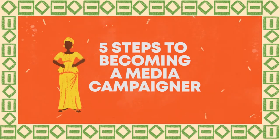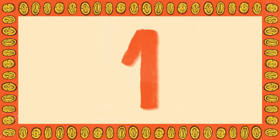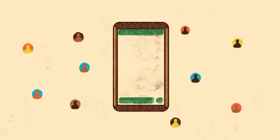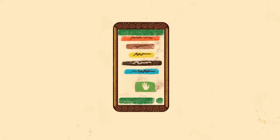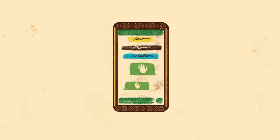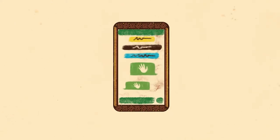5 Steps to Becoming a Media Campaigner. Step 1: Get a smartphone to connect with other activists and set up a WhatsApp group to make your media plans.